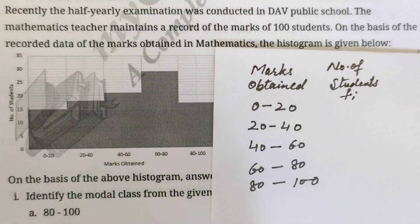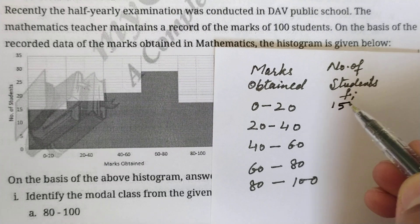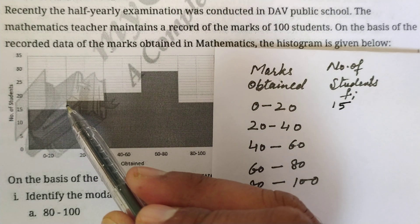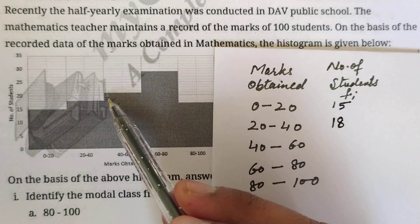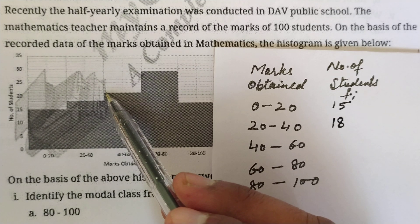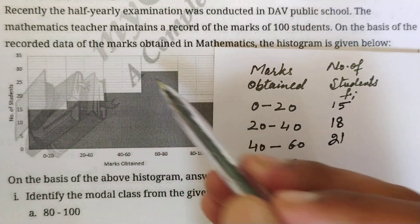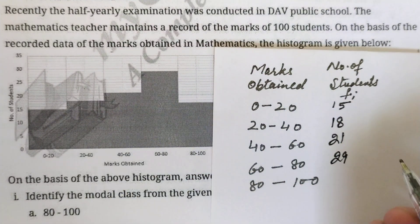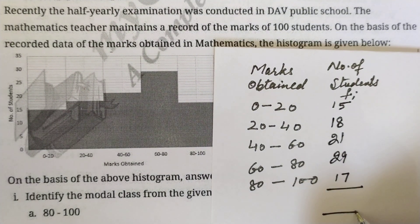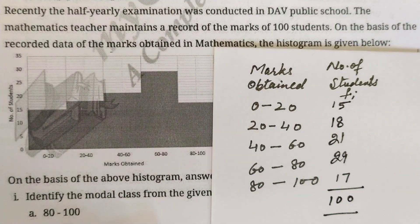Reading the histogram, from 0 to 20 marks there are 15 students; from 20 to 40 there are 18 students; from 40 to 60 there are 21 students; from 60 to 80 there are 29 students; and from 80 to 100 there are 17 students. Adding all these gives a total of 100 students.